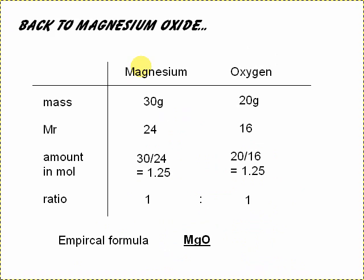So if we go back to the magnesium oxide, we had 30 grams of the magnesium, 20 grams of the oxygen. Taking into account the relative masses of these of 24 and 16, we can work out the amount in mole by taking the mass, dividing it by the relative mass, do that in both cases, and in both cases, we come out of 1.25. So in terms of atoms, the ratio is 1 to 1, and therefore we'd say the empirical formula of this compound is MgO.